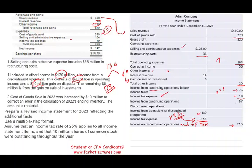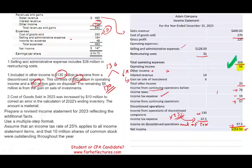From continuing operations we have $57 million, and from discontinued operations $97.5 million, giving us net income of $154.5 million. However, if you are evaluating this company, you would not focus on the $154.5 million. You would focus on the $56 million from operations — that is the number that reflects the company's true performance.